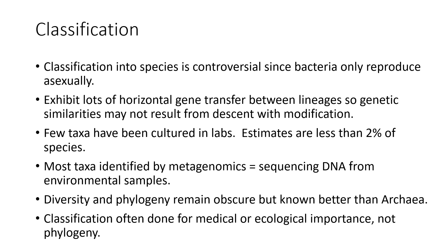Also very few taxa have been cultured in labs — some are very difficult to grow because we just don't have the right nutrients for them. Estimates are that less than 2% of all bacteria species have ever been grown in laboratories. Most bacteria are now identified by metagenomics, which means sequencing DNA from environmental samples — we don't actually grow the bacteria themselves, we just sample the DNA in an area and identify different species from those samples. Diversity and phylogeny are constantly changing as we learn more; it is better known than archaea, but it continues to change. Often classification is done for medically important or ecologically important bacteria and not necessarily phylogeny.